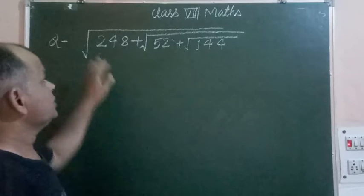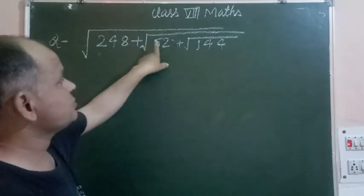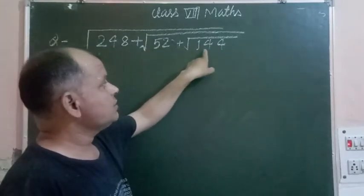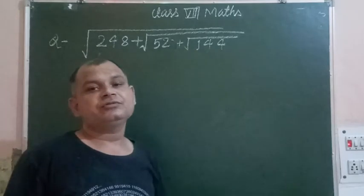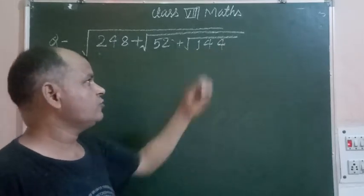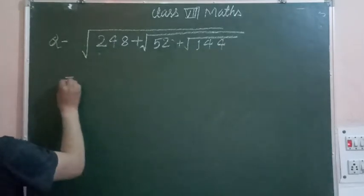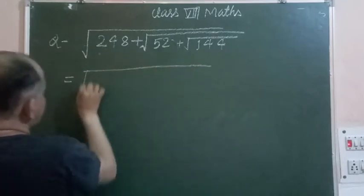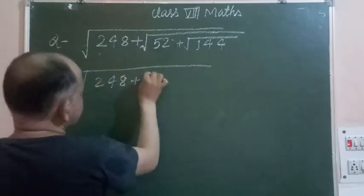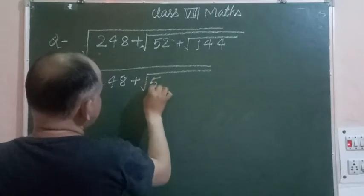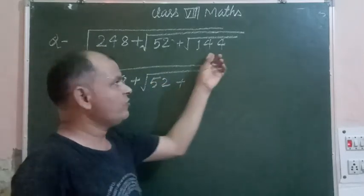The question is: square root of 248 plus square root of 52 plus square root of 144. First, we take the square root of 144.